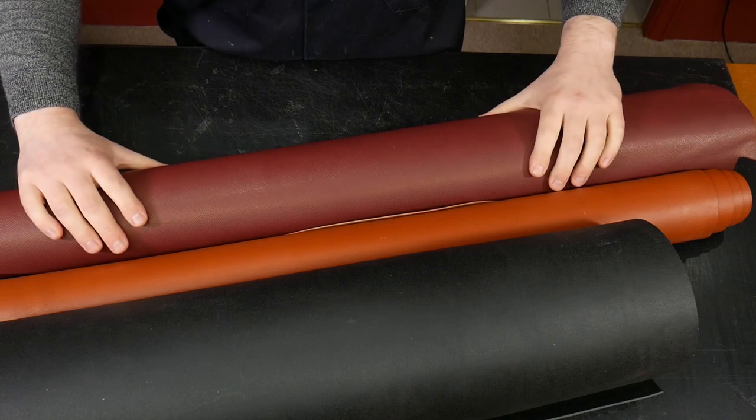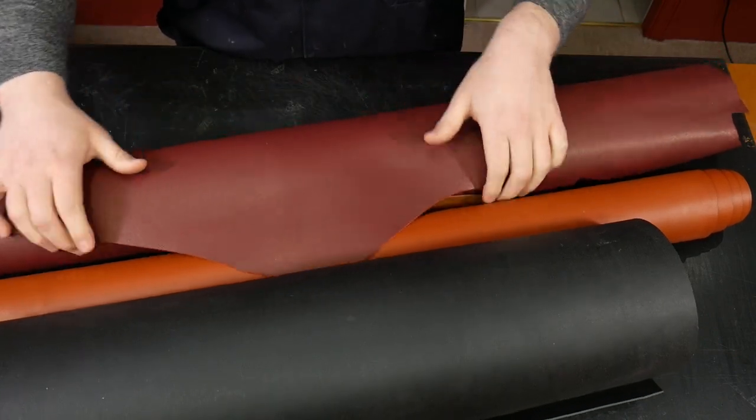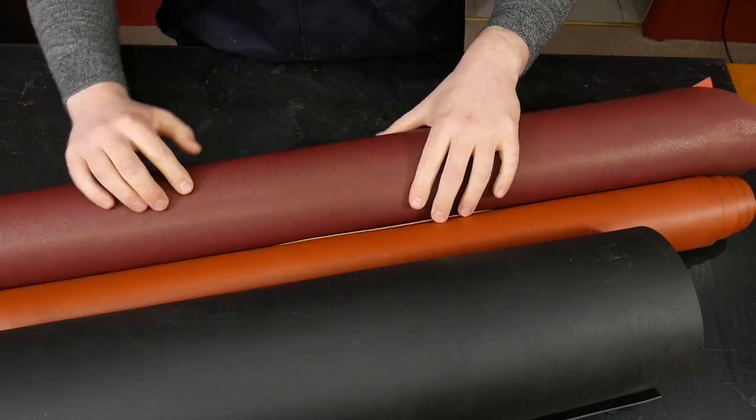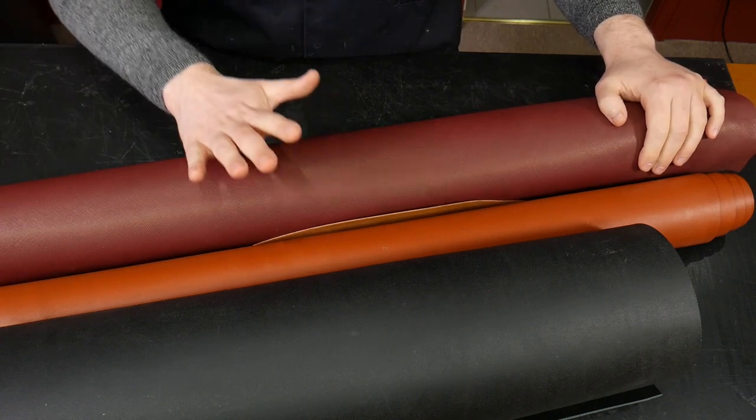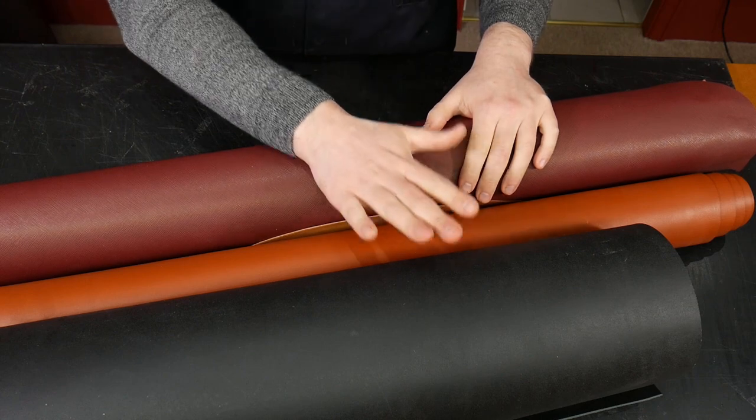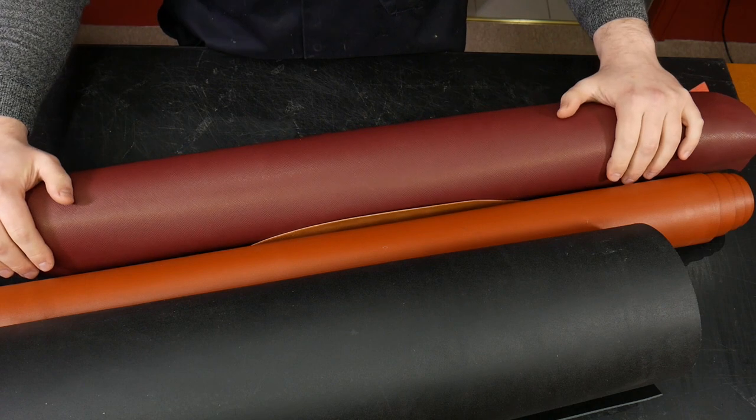So what I have here is a piece of saffiano calf. This is a printed grain on here which is like a cross hatch so it looks a little bit natural. It looks like a boarded leather which would have been done with a wooden board one way and then the opposite way so the creases make these little tiny squares but this is simply printed with a hot press to give that effect.